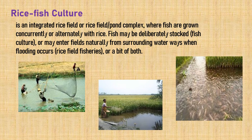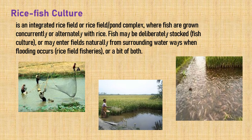The next practice is rice-fish culture. This is an integrated rice field or pond complex where fish are grown concurrently or alternately with rice. Fish may be deliberately stocked or may enter fields naturally from surrounding waterways when flooding occurs. Sometimes after harvesting, farmers raise fish in the moist portion of the rice field for consumption and for selling.